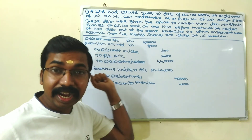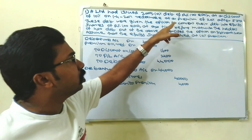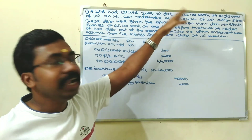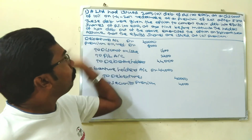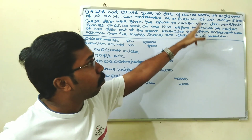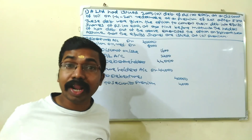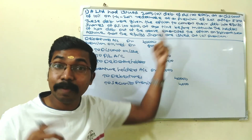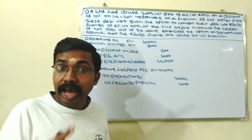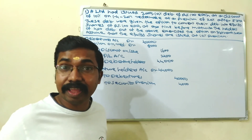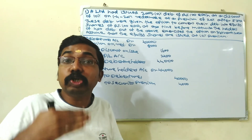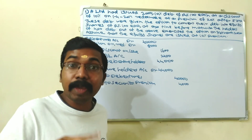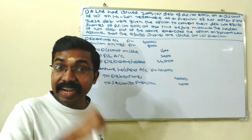A Limited had issued 2,000 ten-percentage debentures of ₹100 each at a discount of 10% on 1st April 2017, redeemable at a premium of 20% after 5 years. Since redemption is at a 20% premium, we will debit the premium on redemption account.